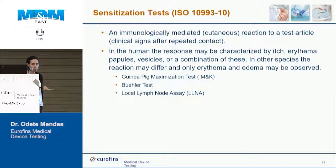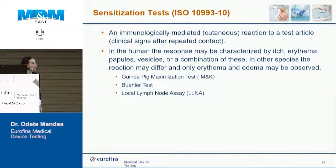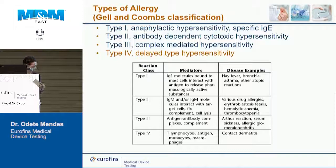Sensitization tests evaluate whether a device will cause allergies — immunologically mediated or cutaneous responses. To assess potential for human sensitization, three animal models can be used: the guinea pig maximization test (GPMT), the Buehler test (both using guinea pigs), and the local lymph node assay (LLNA) using mice. You choose one of these three tests.